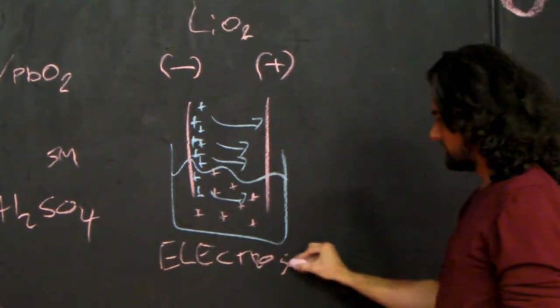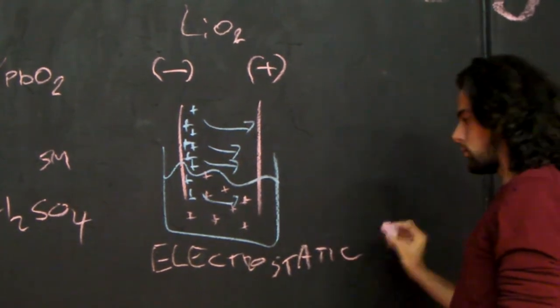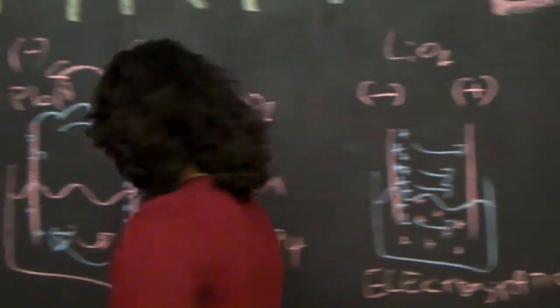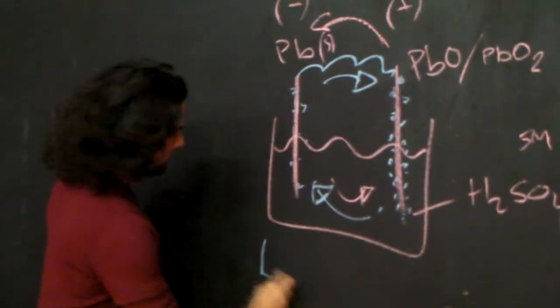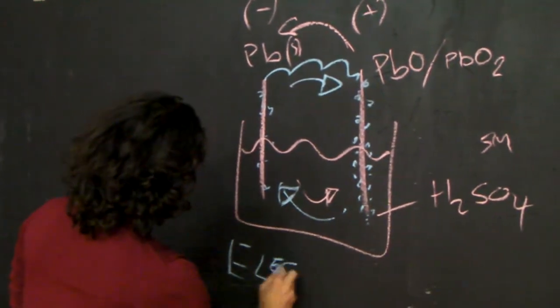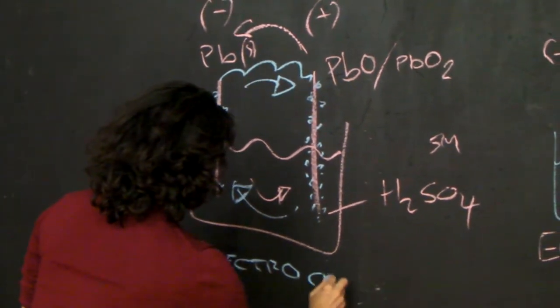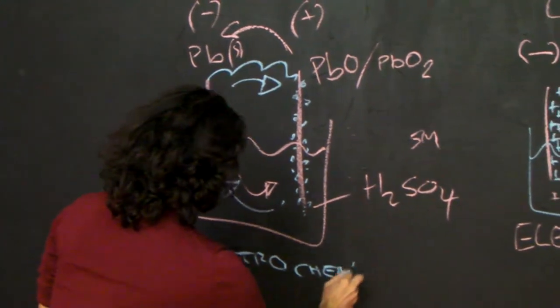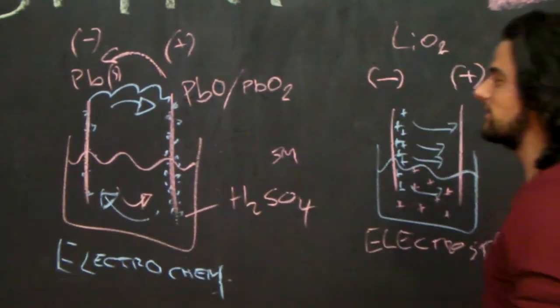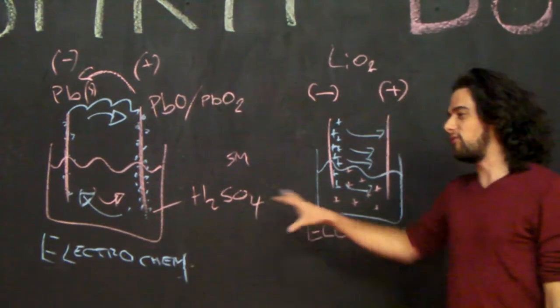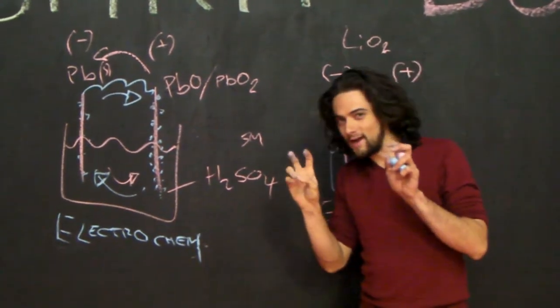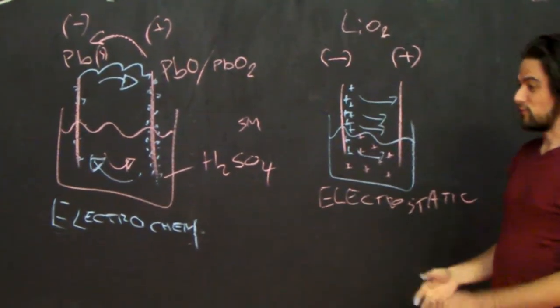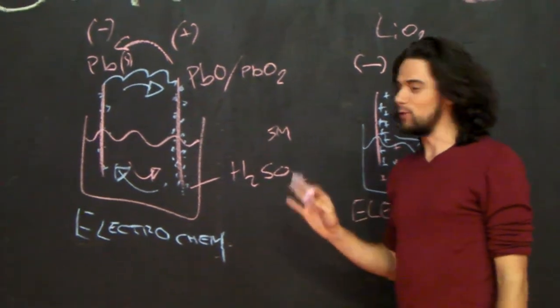So this is electrostatic, this one is electrochemical. So these are currently the two main forms of batteries.